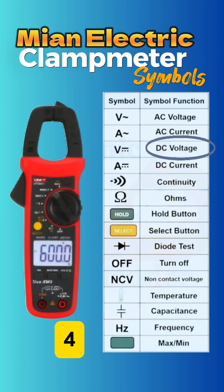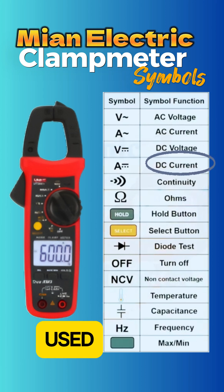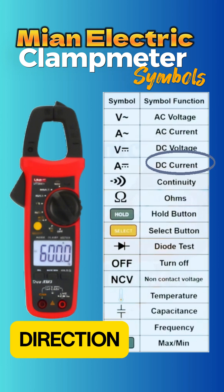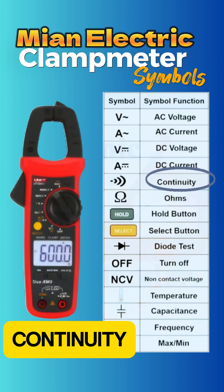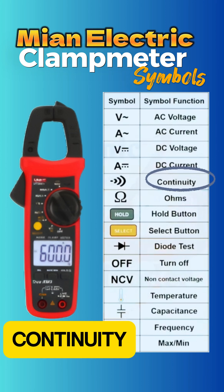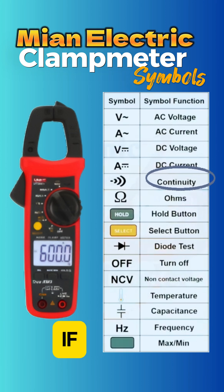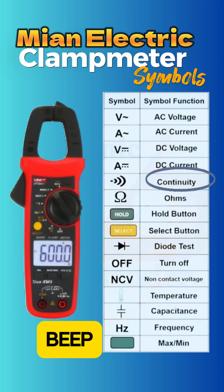Symbol 4: A, DC current. This is used to measure DC current, which flows in one direction. Symbol 5: continuity. This symbol is for continuity test. If the wire or circuit is complete, the meter will beep.